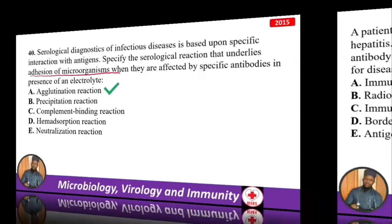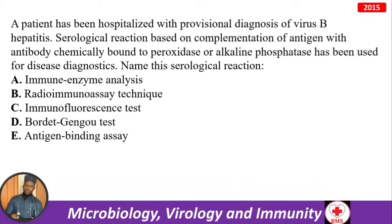A patient hospitalized with provisional diagnosis of hepatitis B — a serological reaction based on complementation of antigen with antibody chemically bound to peroxidase or alkaline phosphatase (enzymes) was used. The answer is immune enzyme analysis (ELISA).